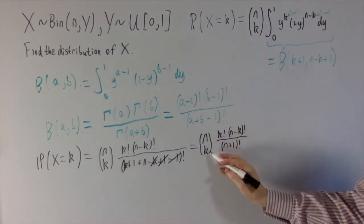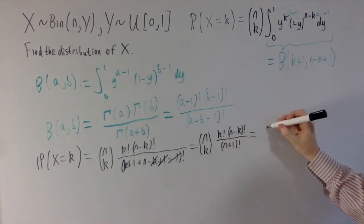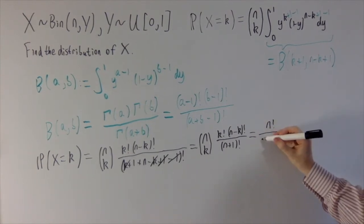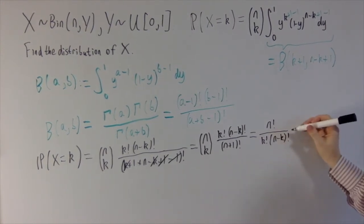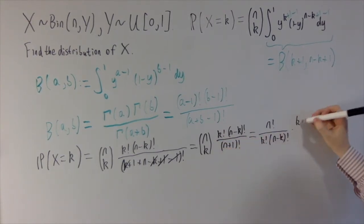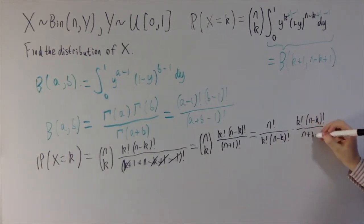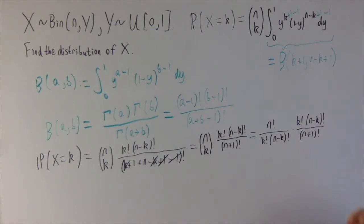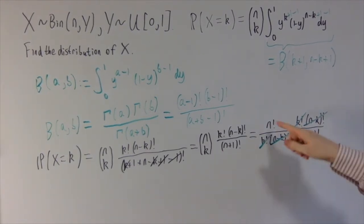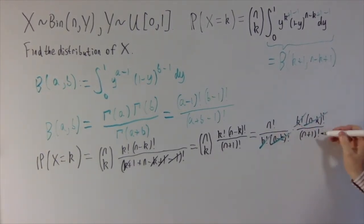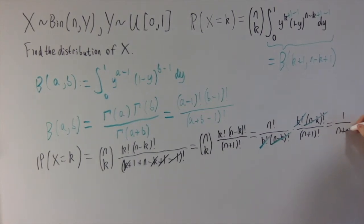Using the definition of n choose k in terms of factorials — n choose k equals n factorial divided by k factorial times (n−k) factorial — we substitute this in. So we have n factorial divided by k factorial times (n−k) factorial, multiplied by k factorial times (n−k) factorial, all divided by (n+1) factorial. The k factorials cancel, the (n−k) factorials cancel, and we're left with n factorial divided by (n+1) factorial, which is just 1 over n+1.